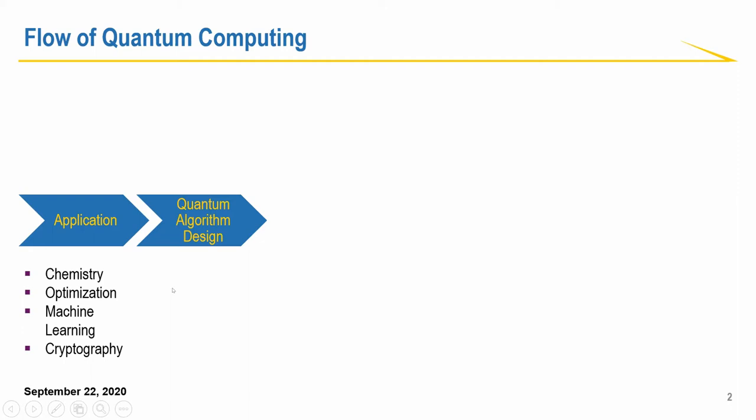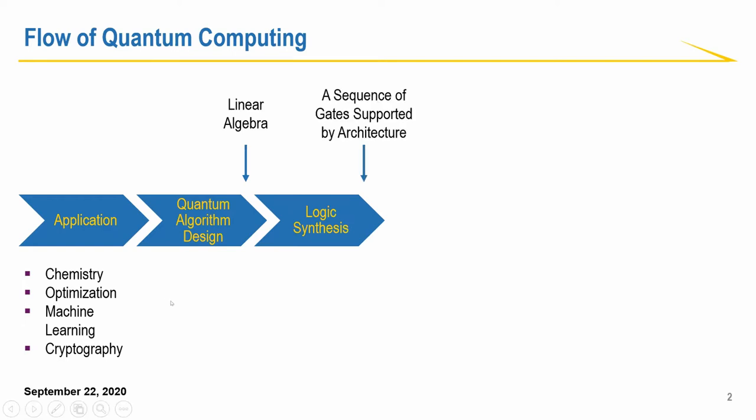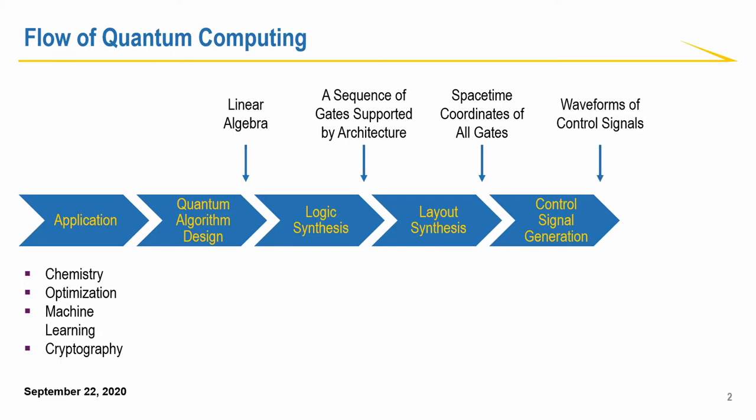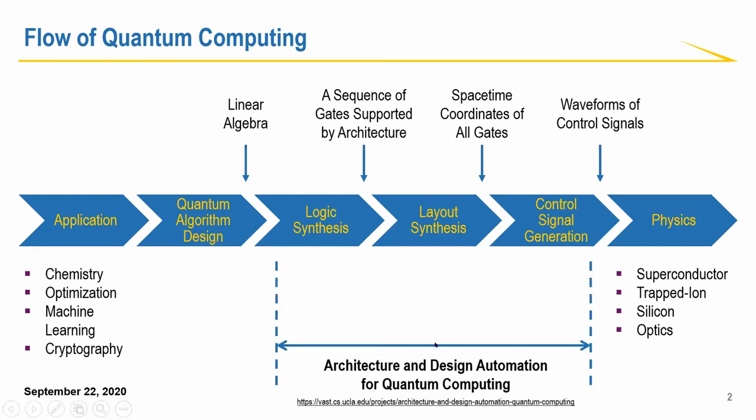The first step is quantum algorithm design and the result is some form of linear algebra where the quantum states are vectors and the operations are matrices. Then we go through logic synthesis. The result is a sequence of gates supported by the architecture because we cannot just throw some random gates to our hardware. Then we go through layout synthesis. The result is the spacetime coordinates of all gates. Then we go through control signal generation. The result is waveforms of control signals. And finally, we go to the fundamental physics, whether it's superconductor or trapped ion, silicon or optics. We think that logic synthesis, layout synthesis, and control signal generation are the three processes that are architecture concerned. So we have this research project architecture and design automation for quantum computing.